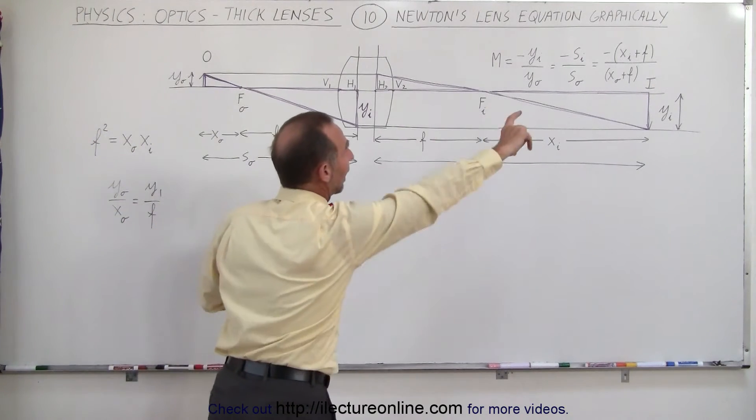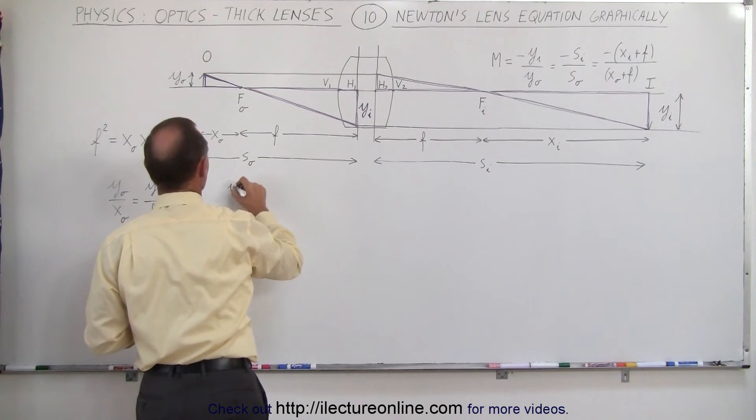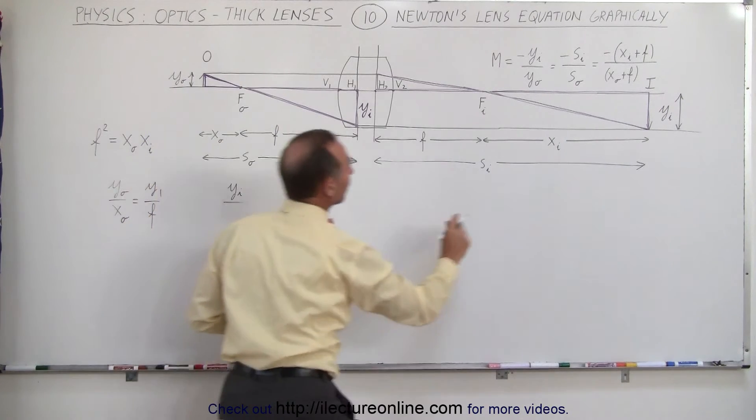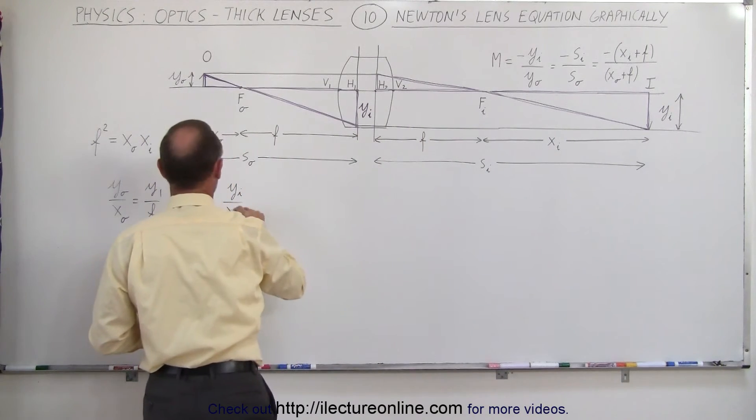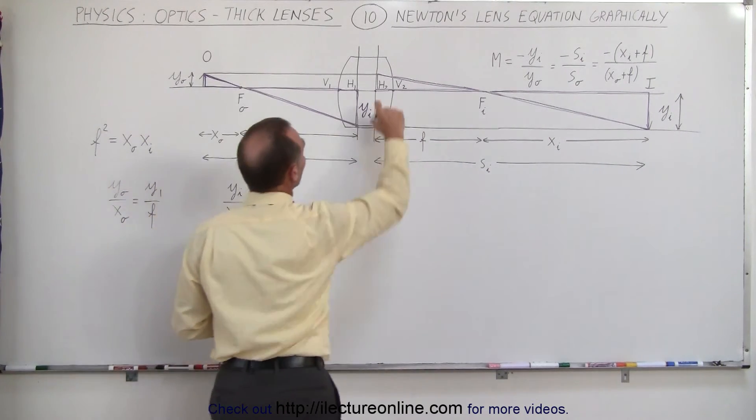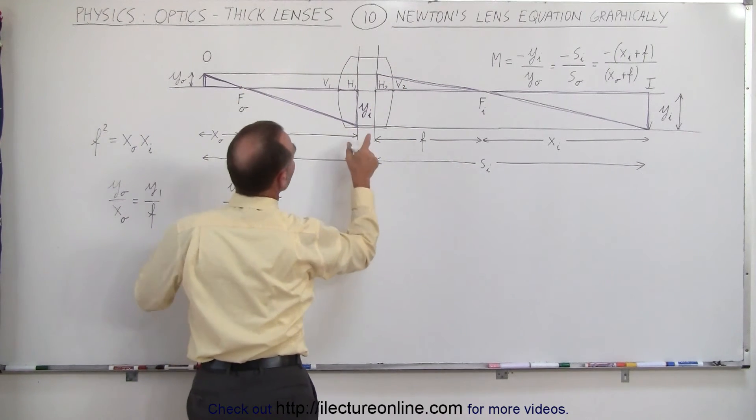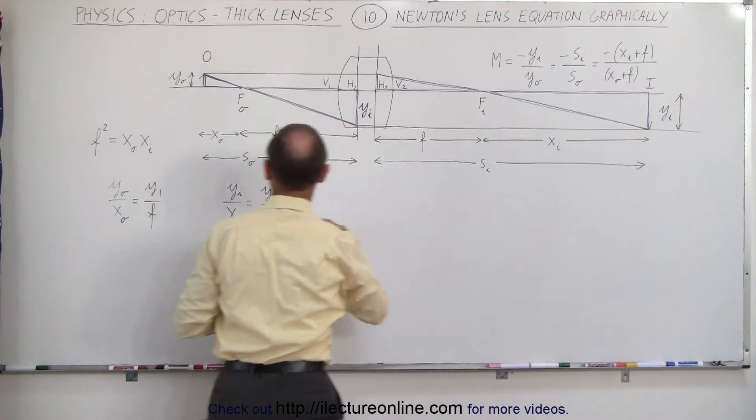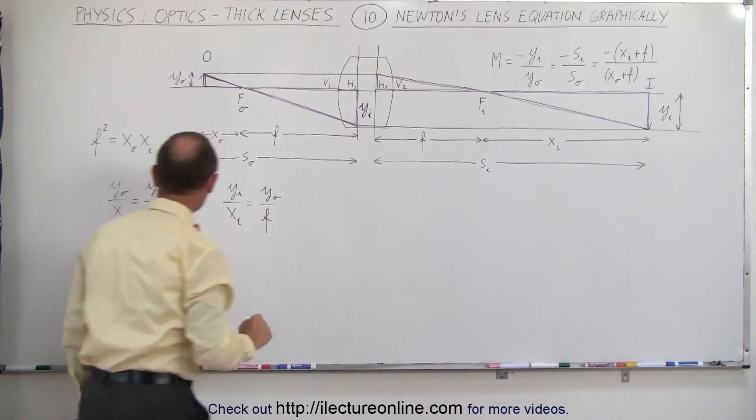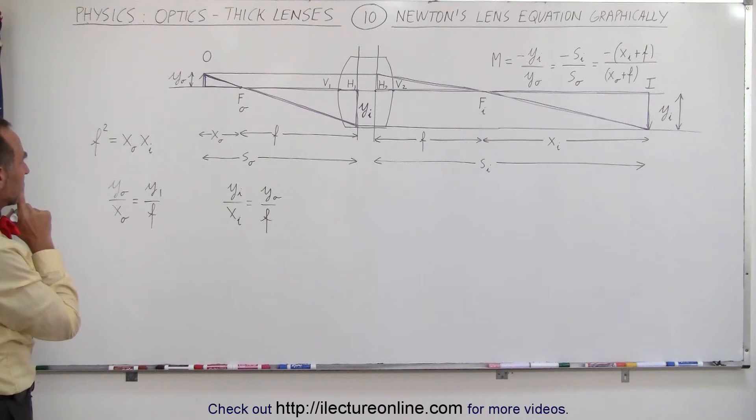So using that triangle, we can say that the height, y sub i, divided by x sub i, must equal y sub O divided by f.